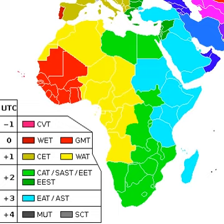Eastern European Summer Time: an equivalent time zone covering European and Middle Eastern countries during daylight savings, also at UTC plus three.